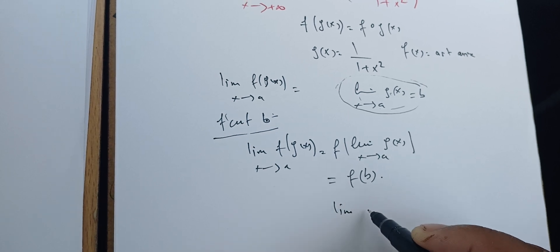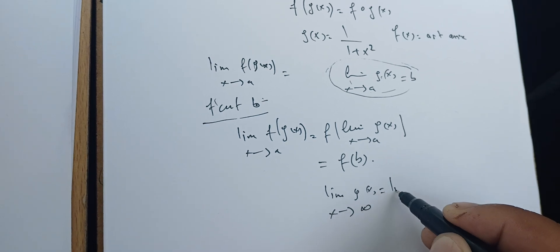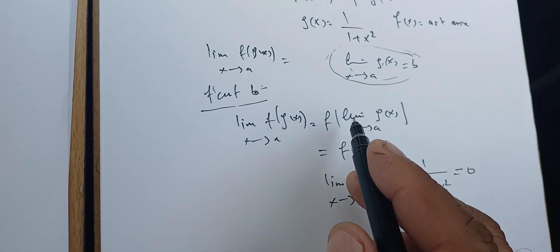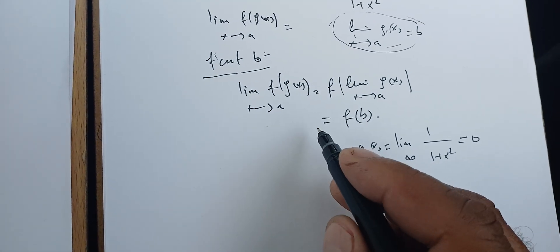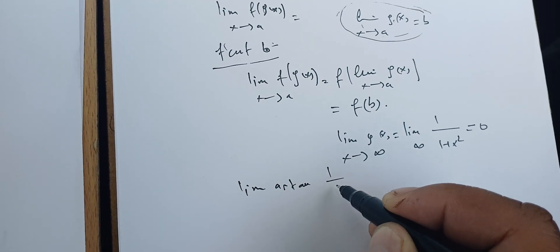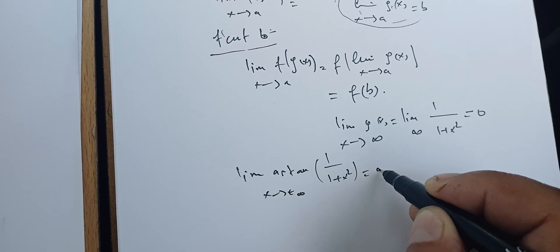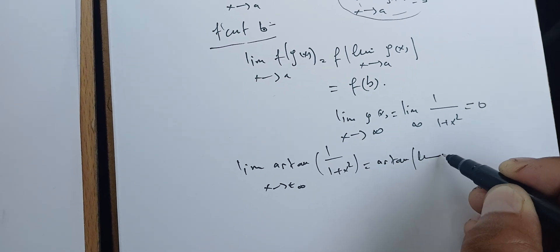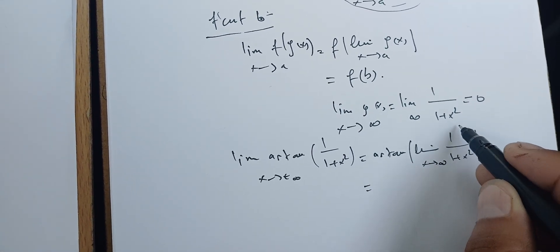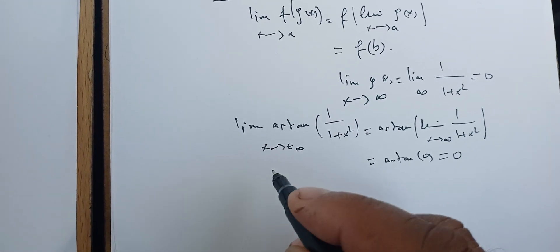When we take the limit of g of x as x goes to infinity, that's the limit of 1 over 1 plus x squared, which is zero. Our f is the arc tangent. So the limit of arc tangent of 1 over 1 plus x squared as x goes to infinity becomes the arc tangent of zero, which is zero.